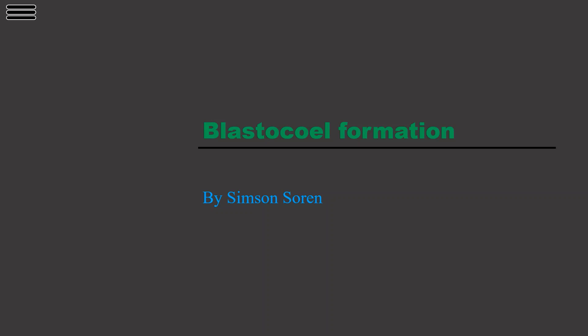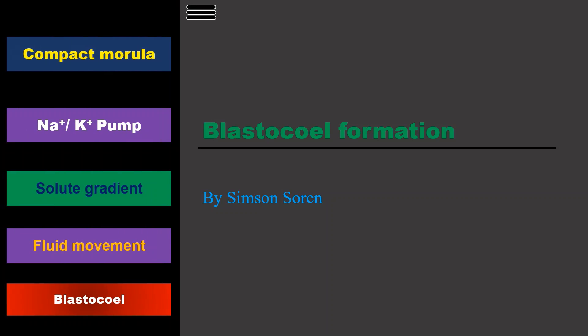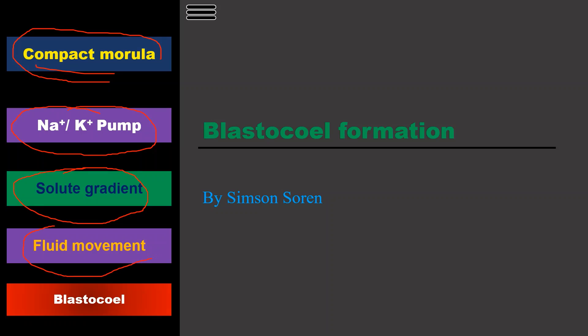Welcome. Today we will discuss how the blastocyst forms in the embryo — blastocyst formation. In this lecture we will be talking about the compact morula, sodium-potassium pump, solute gradient, and due to the solute gradient there is a fluid movement in the embryo, and finally the blastocyst production. Let us discuss this event and how the blastocyst forms in the embryo.